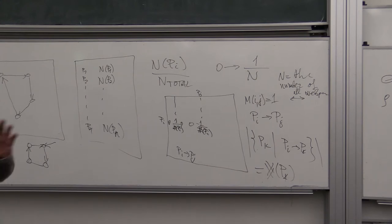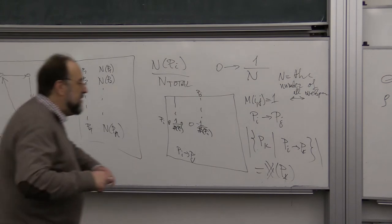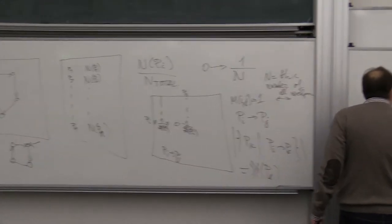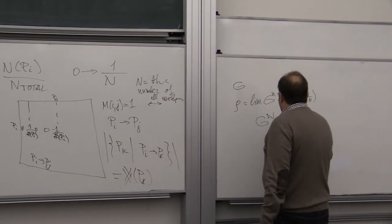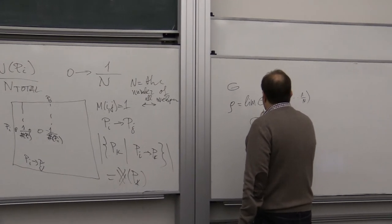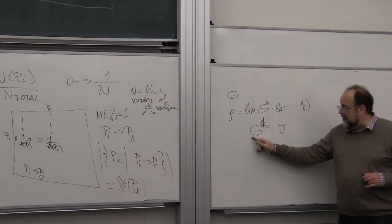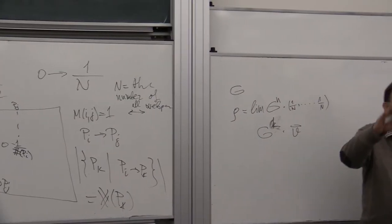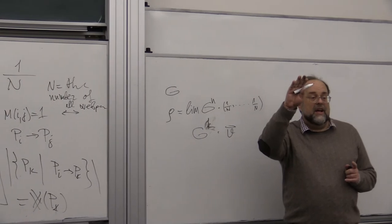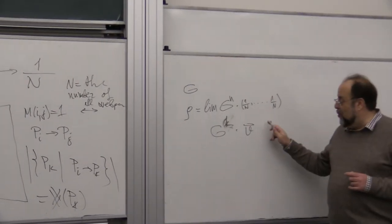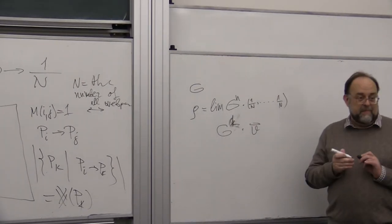So this matrix G to the N, some number K times this vector V, will give you the probability that after K many jumps you are at a particular matrix.